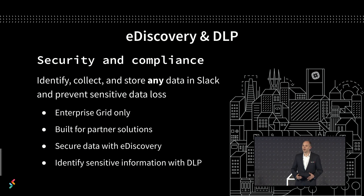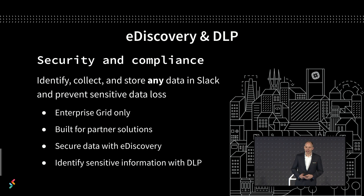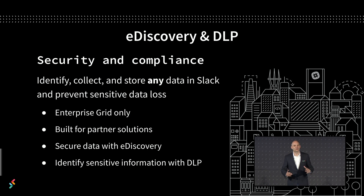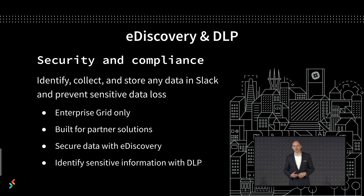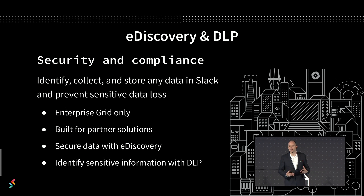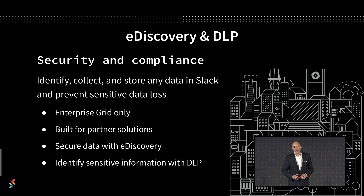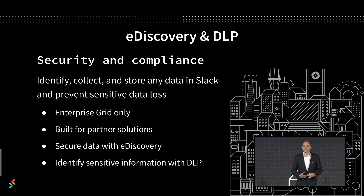The first thing to know about these is that they are enterprise grid only. So if you need a compliance solution, this is a great reason to move up to Enterprise Grid. These APIs allow the administrators within a Slack organization to discover and secure any of the data that is in a Slack org. This includes public channels, direct messages, private channels and even files uploaded to Slack. eDiscovery is broadly all about this process for discovering and isolating information that might need to be used later in a legal context. Regulated industries or governments often require an eDiscovery solution to keep electronic data secure and to actually keep it around for later discovery.